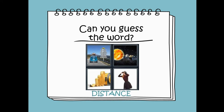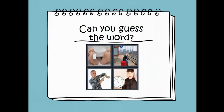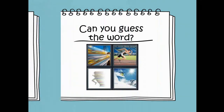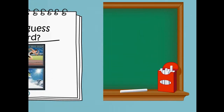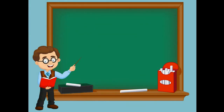Very good! The correct answer is distance. Second word — good job! The correct answer is time. Last word — very good! The correct answer is speed. All right, so before we proceed to the main lesson, we are going to know the objective of our lesson: we are going to calculate speed, distance, and time.